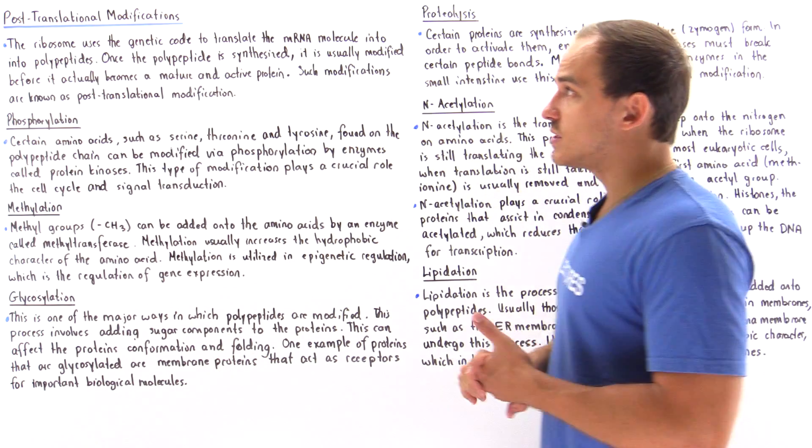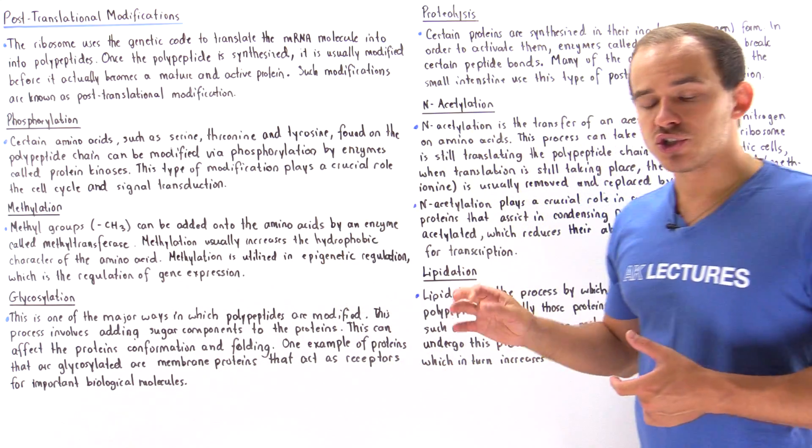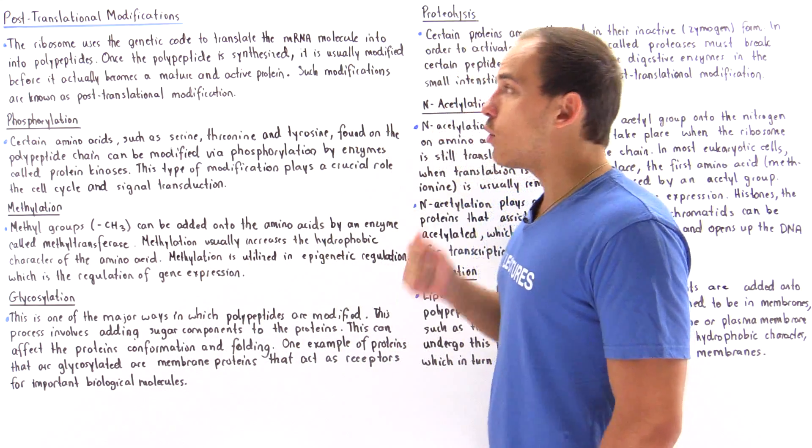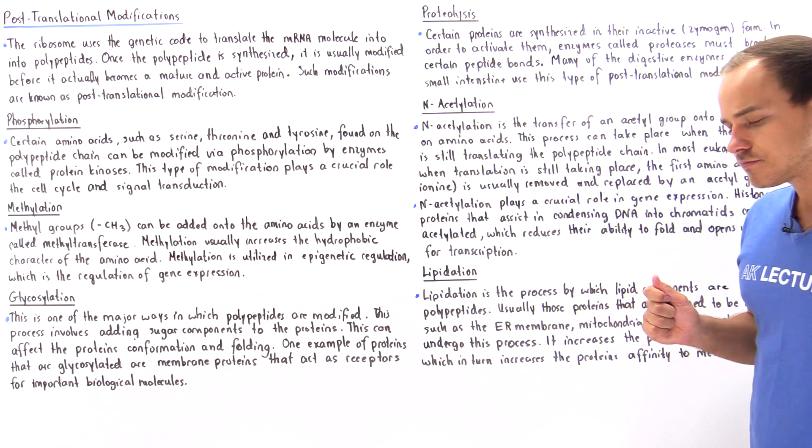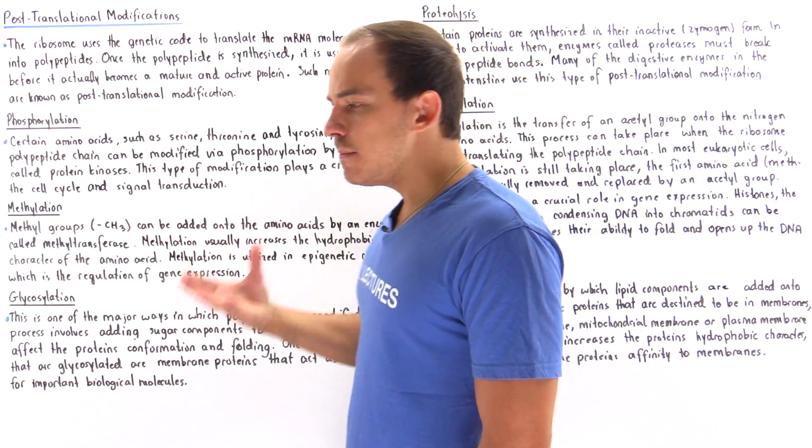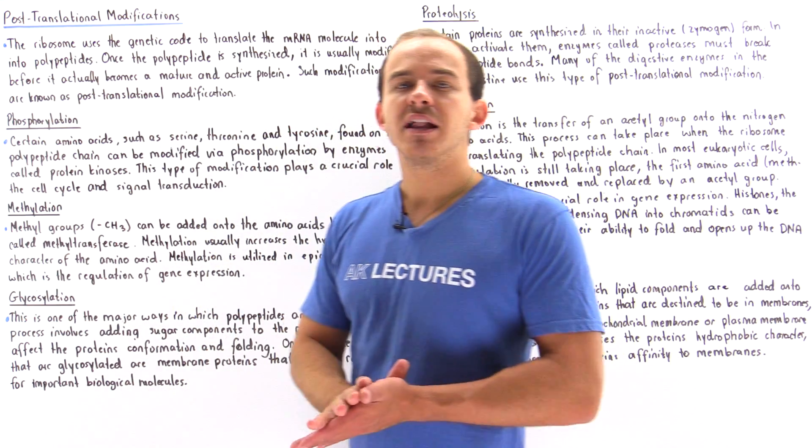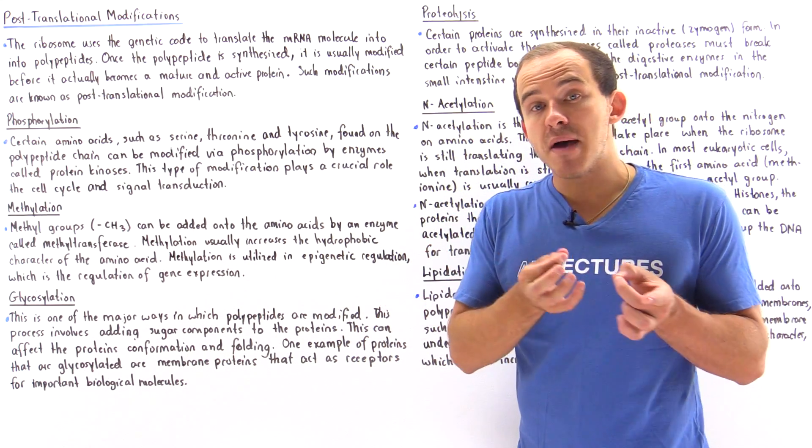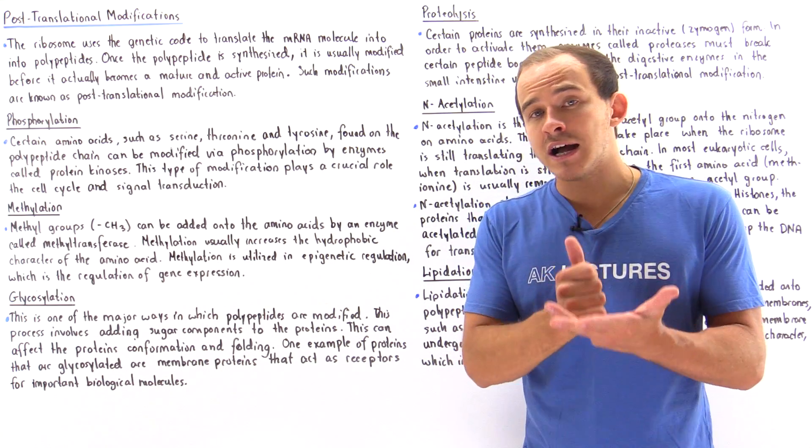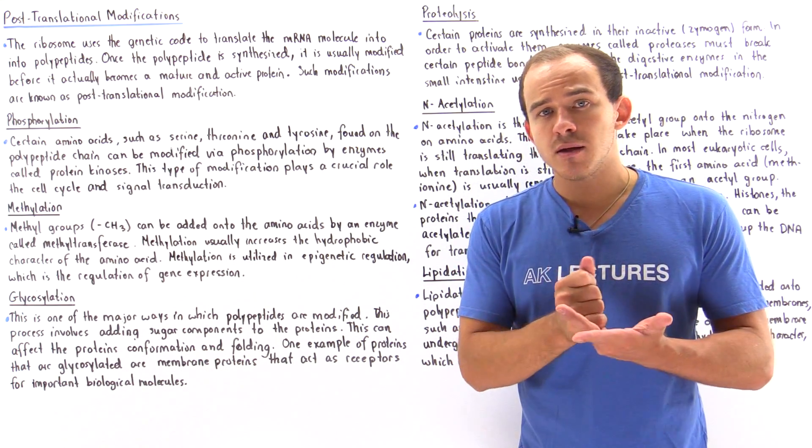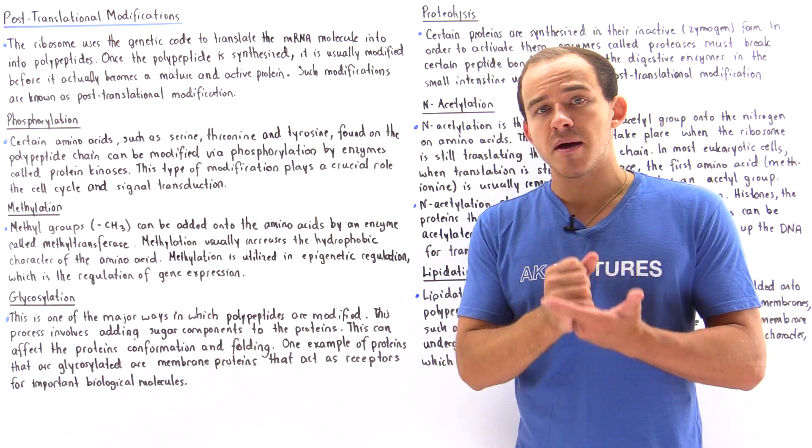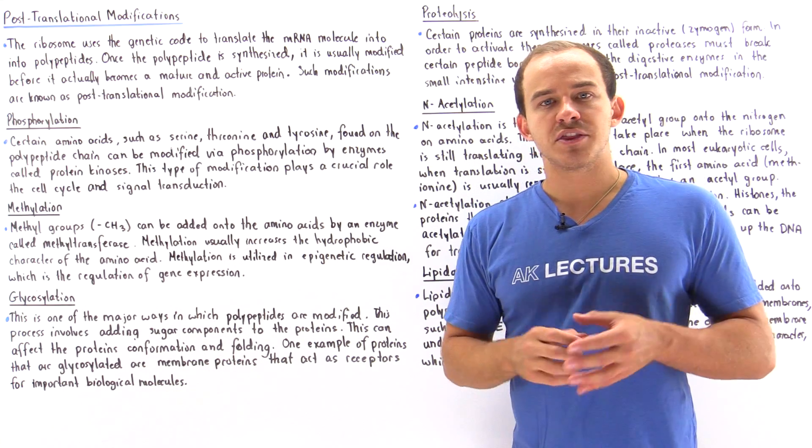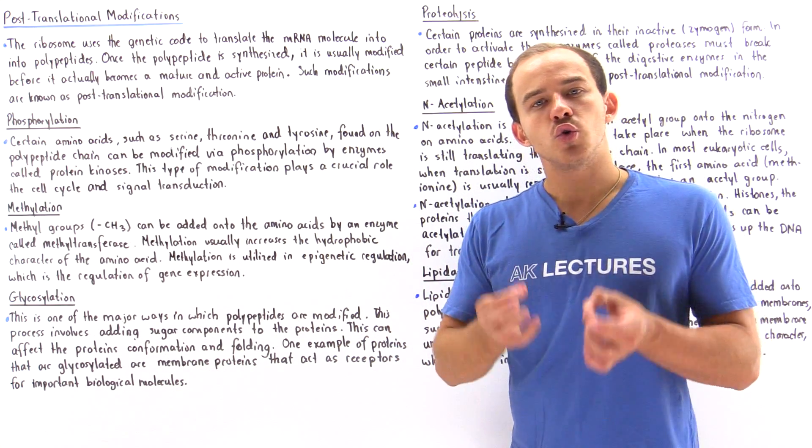Finally, the final process we're going to discuss is lipidation. Lipidation is the process by which we add a lipid component onto our polypeptide chain. Why would we want to add a lipid component onto a polypeptide chain? Basically, those proteins that ultimately end up in a membrane, for example the mitochondrial membrane, the endoplasmic reticulum membrane, or the plasma membrane, need to actually incorporate themselves into those membranes.